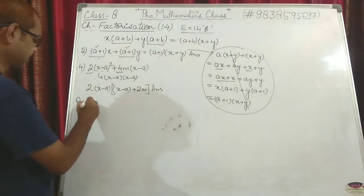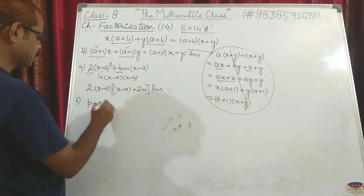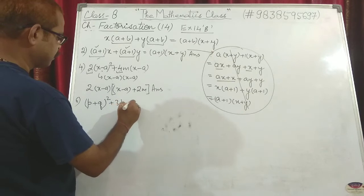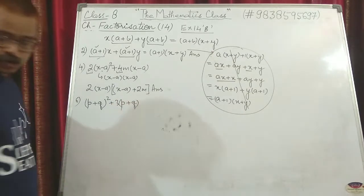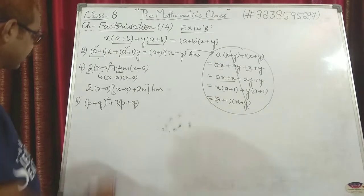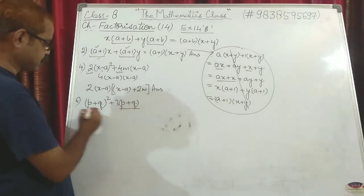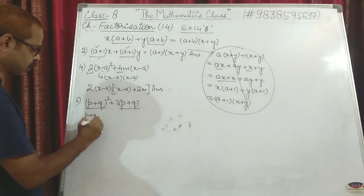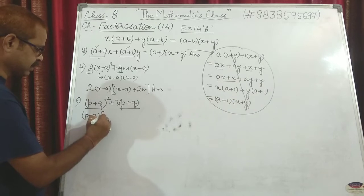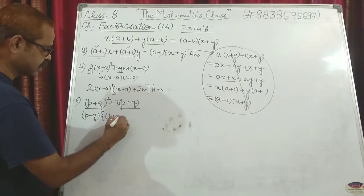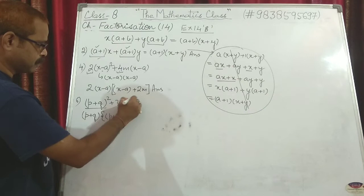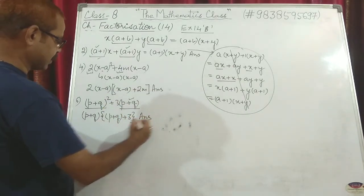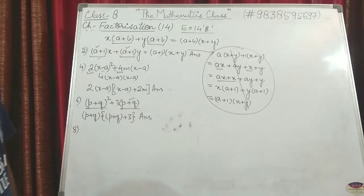Question 6: (p+q)² + 3(p+q). (p+q)² means two (p+q)'s, so take one (p+q) common. What is left from the first term? One (p+q) remains. From the second term, (p+q) is gone and only 3 is left. Answer: (p+q)[(p+q) + 3].